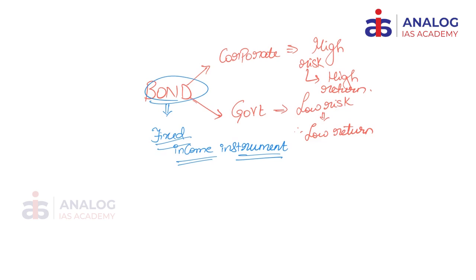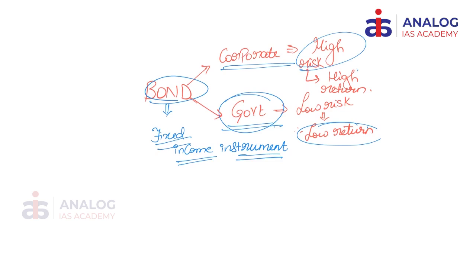Now bonds will be of two kinds in a market: we'll have corporate bonds and we'll have government bonds. Government has less risk of failing, so there is low return involved in government bonds. Corporates have high risk but they also promise high returns. For example, a company like Tata or Reliance will definitely offer a better interest rate than government bonds. So we can say that corporate bonds are high risk and government bonds are low risk.